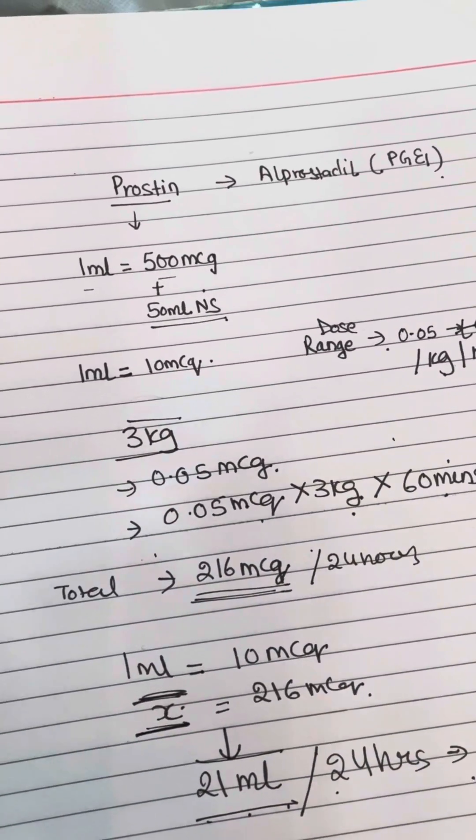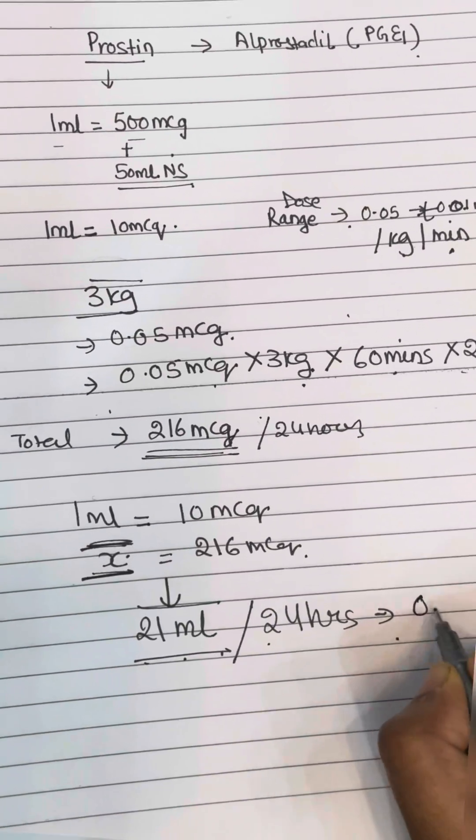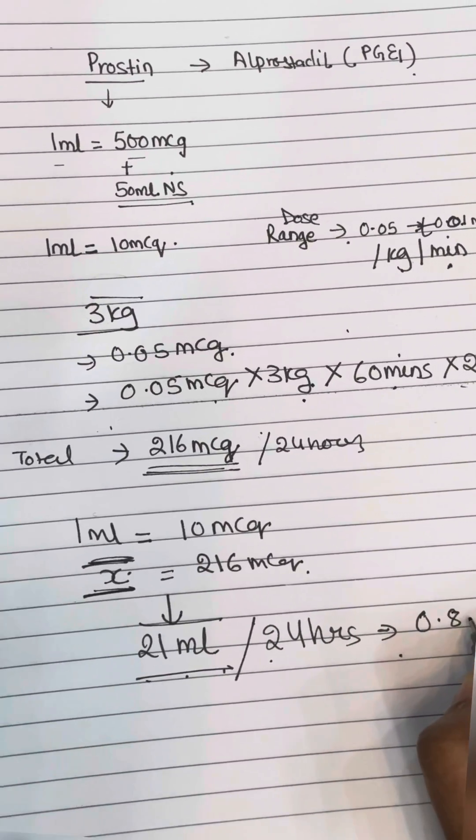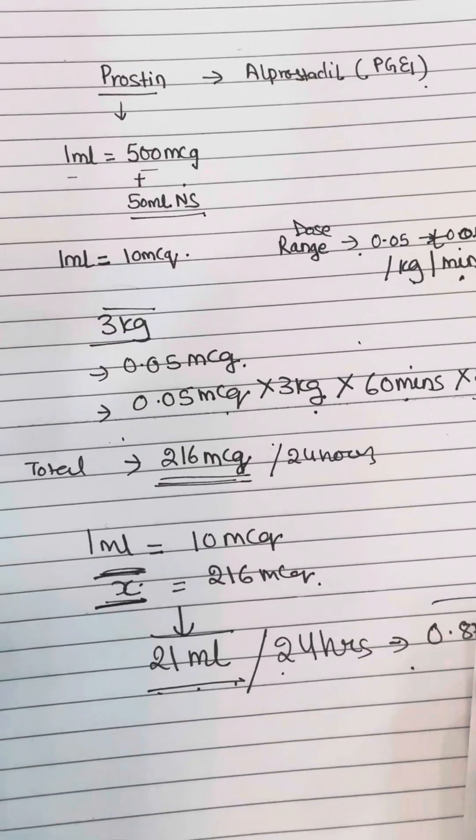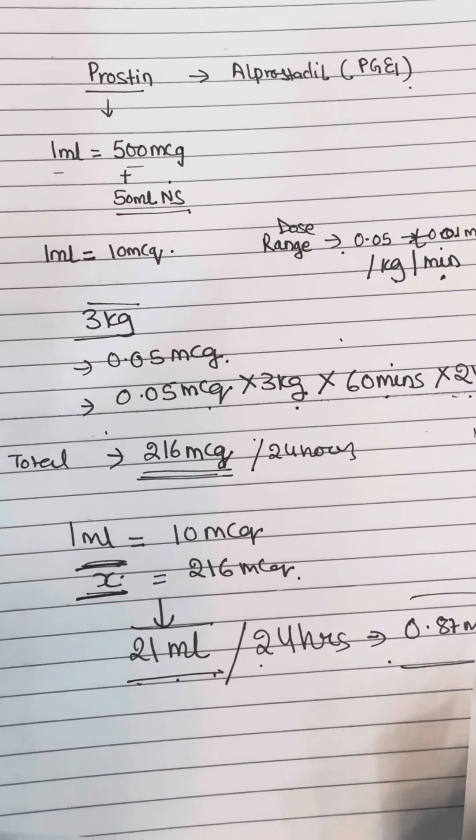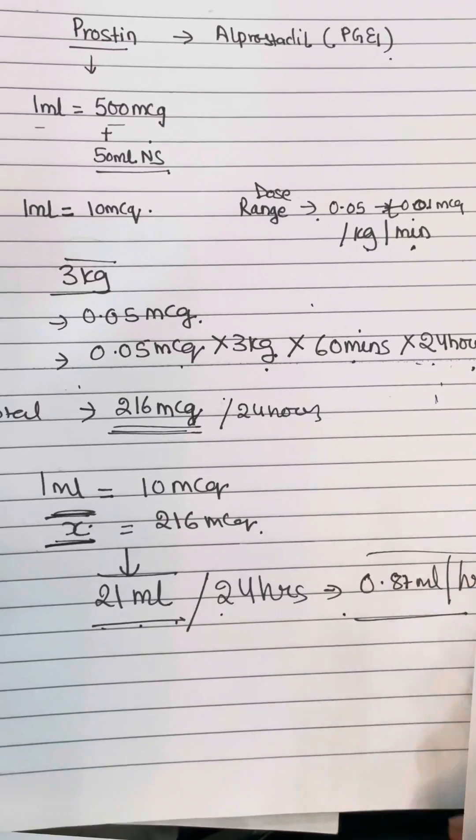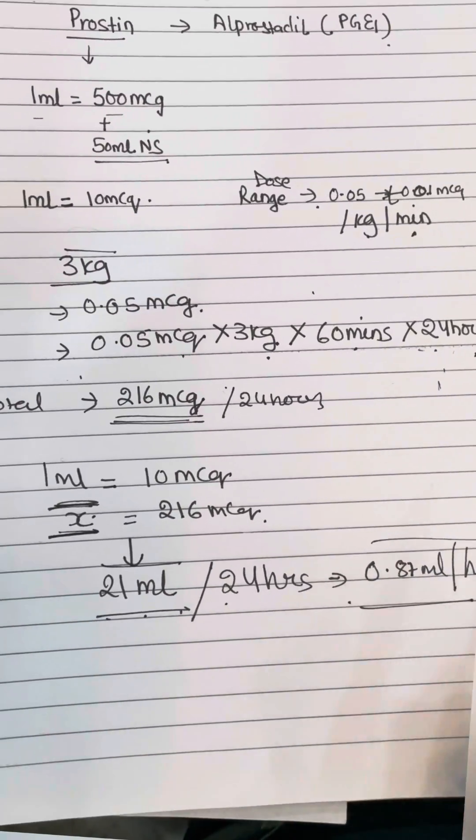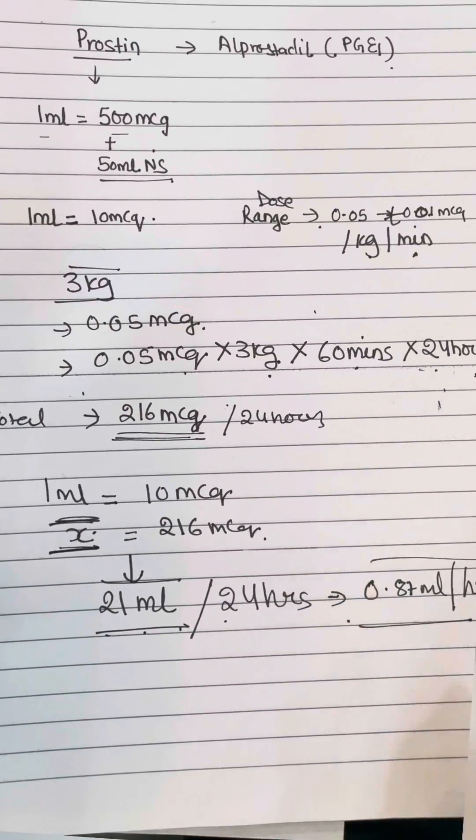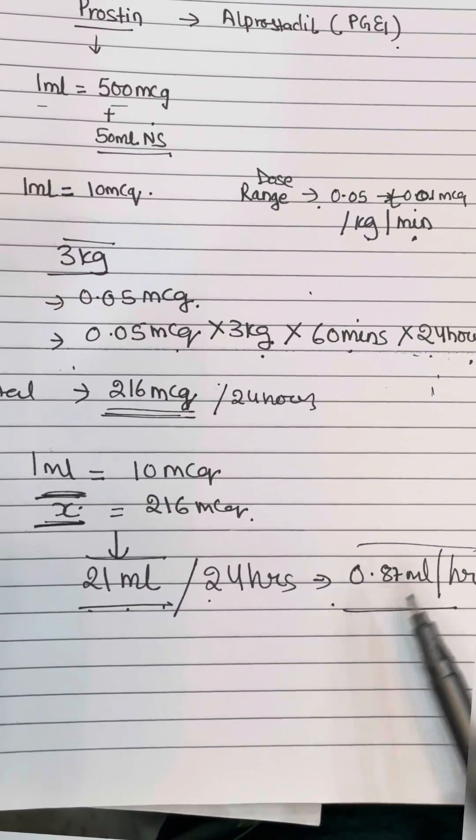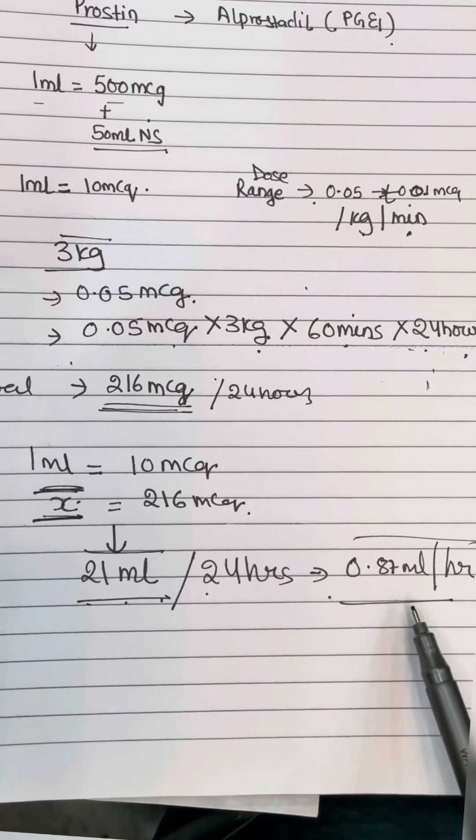...I think 0.087ml per hour. So this is the simplest way to understand how to give prostin. There are many complicated methods available, but this is the basic math that you need to know, and with this you will not get the wrong dosing.